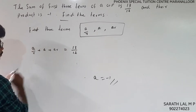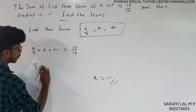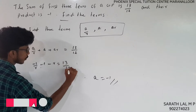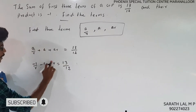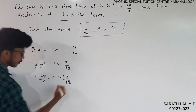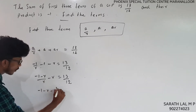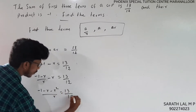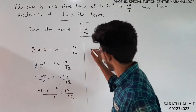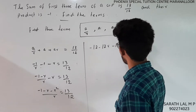Now substitute a equals minus 1. So the equation becomes: minus 1 by r plus minus 1 plus minus r equals 13 by 12. This gives us: minus 1 minus r minus r² all over r equals 13 by 12. Cross-multiplying: minus 12 minus 12r minus 12r² equals 13r.